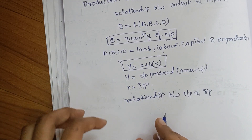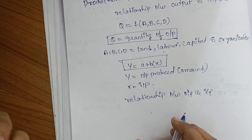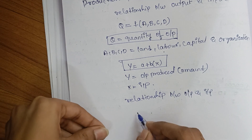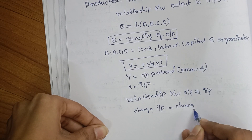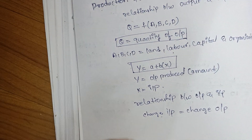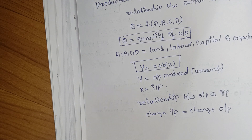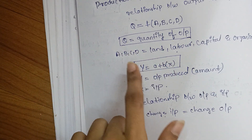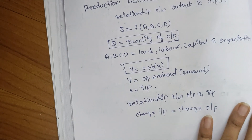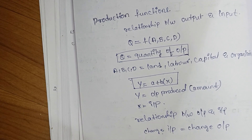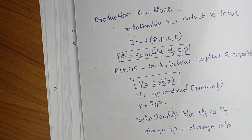Whenever the input changes, the output may also change. If you give less inputs — less labor, less capital — the result will also be less. So if there is a change in input, there will automatically be a change in output; it is variable. This is all about the production function. We should remember the formula, and in the next videos we will cover other topics like MRTS and least cost combination.